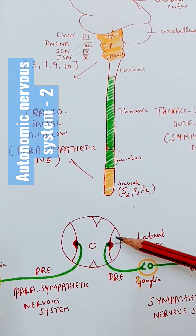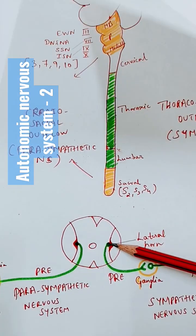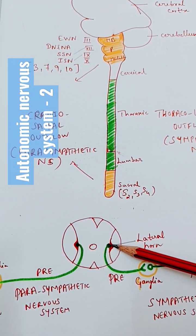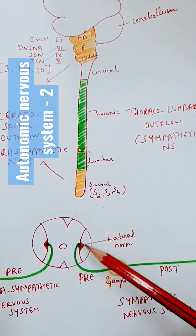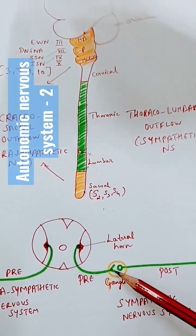The neurons arising from the lateral horn are parasympathetic or sympathetic in nature, meaning they are autonomic nervous system neurons. Now if you take an example here, this neuron arises, comes, and ends near a ganglia which is very close to the spinal cord.